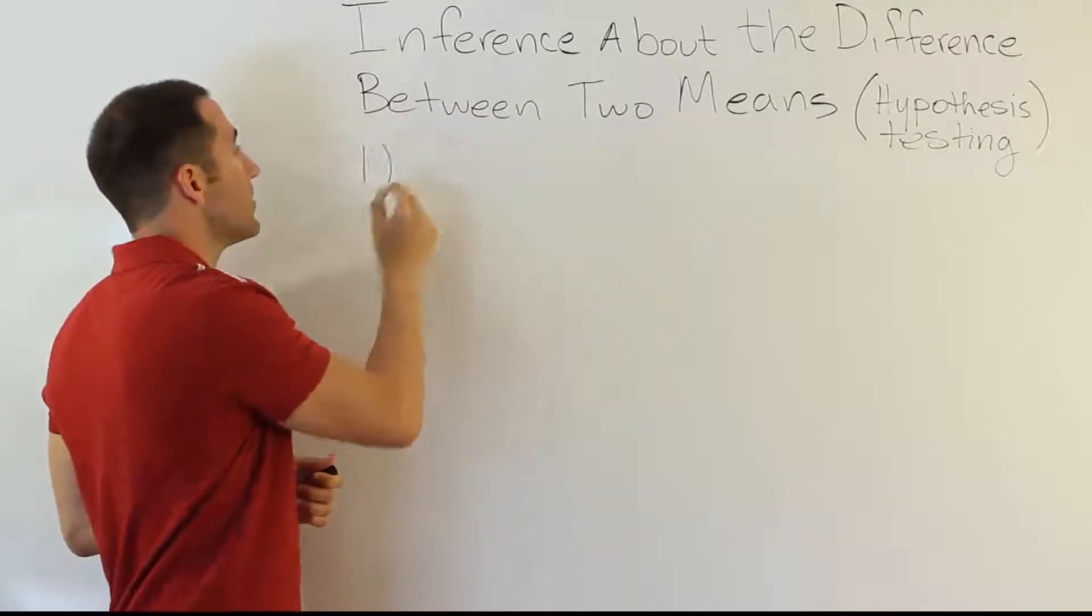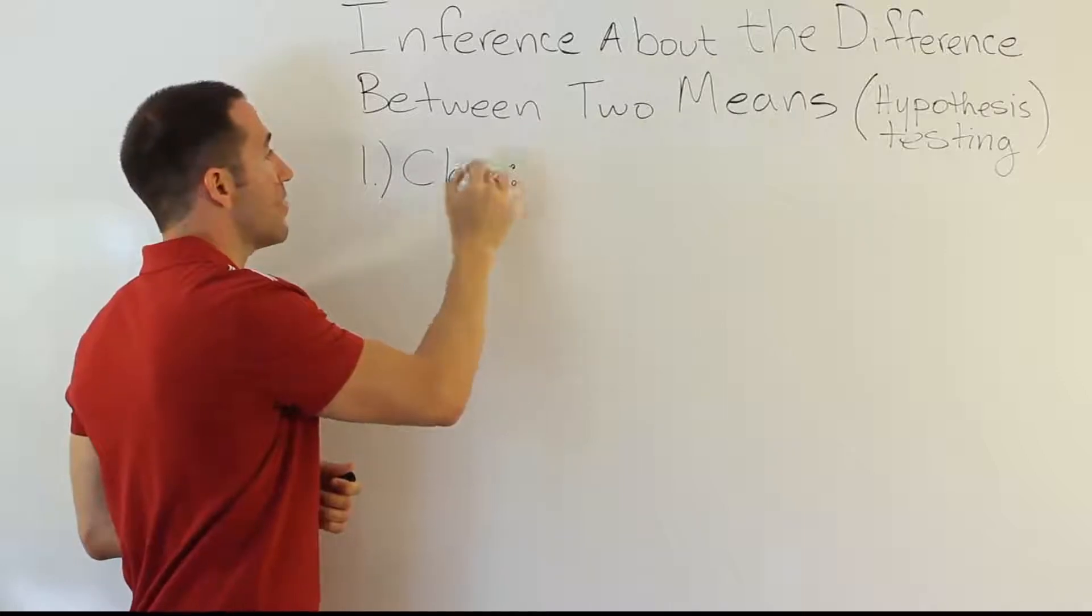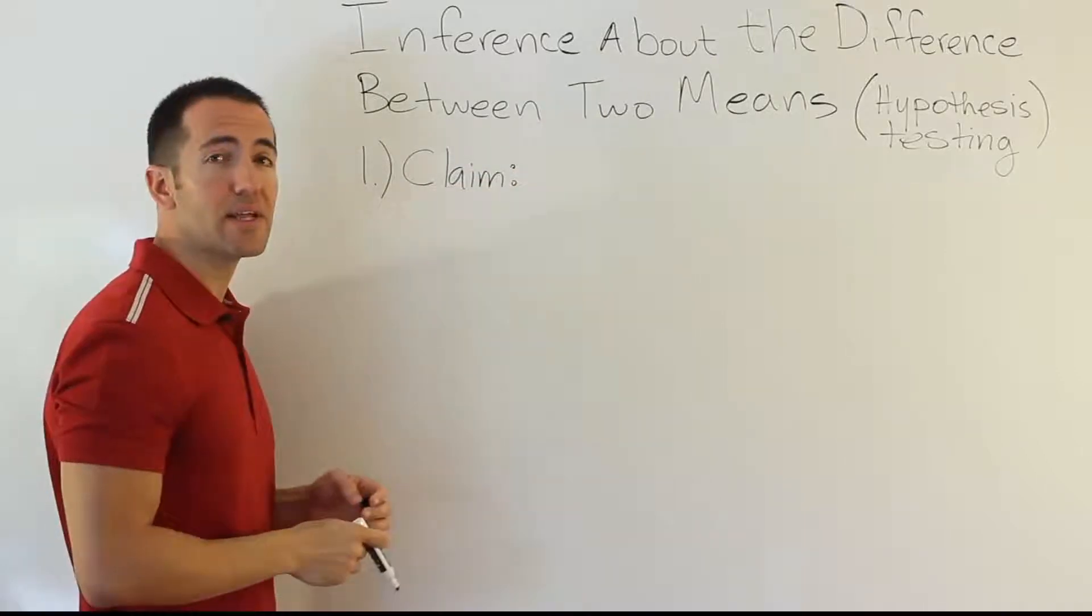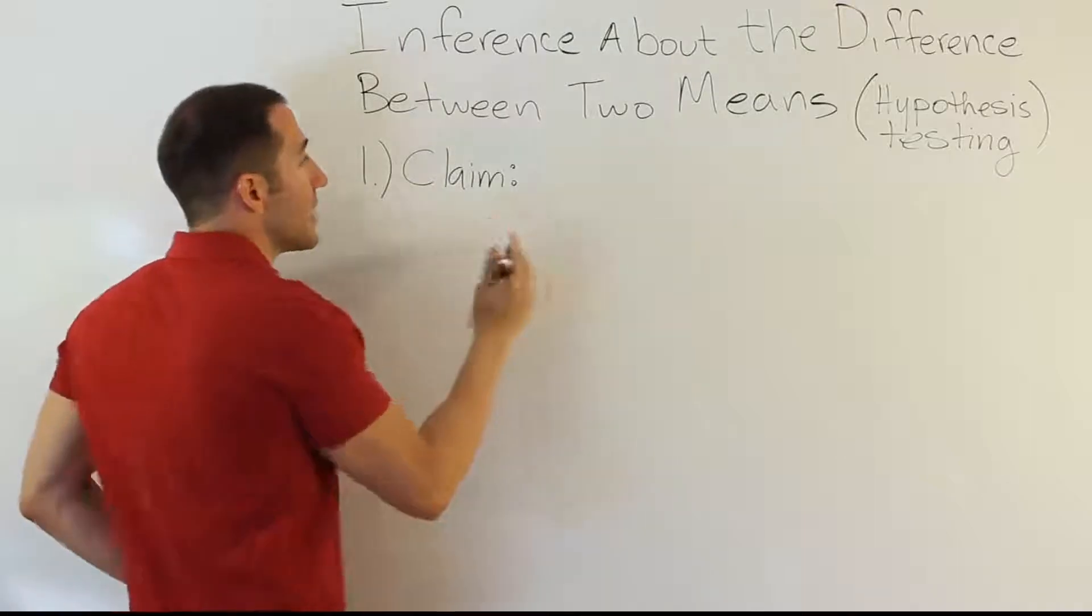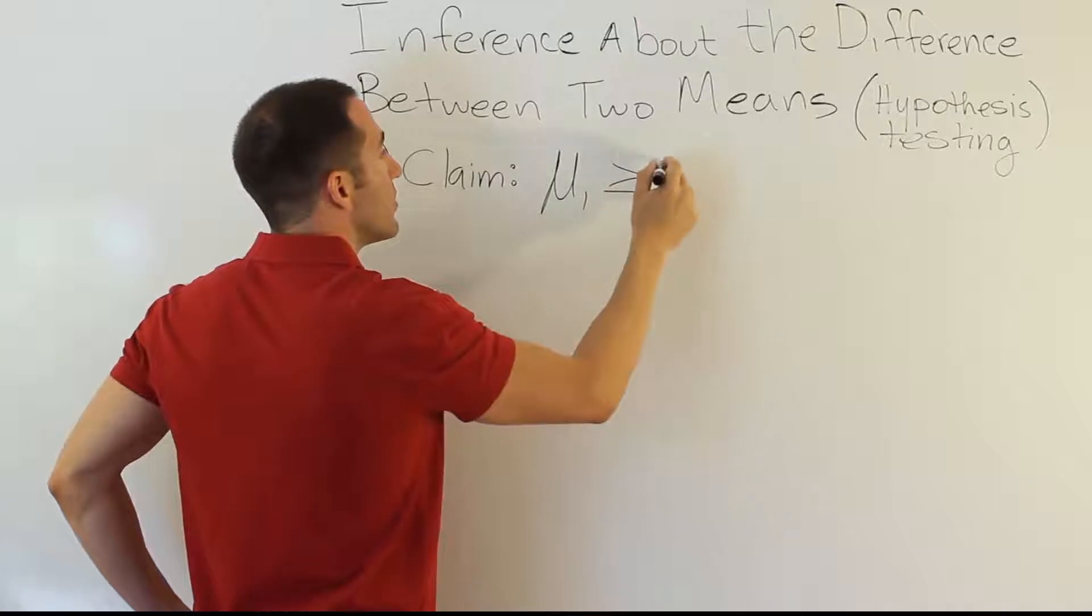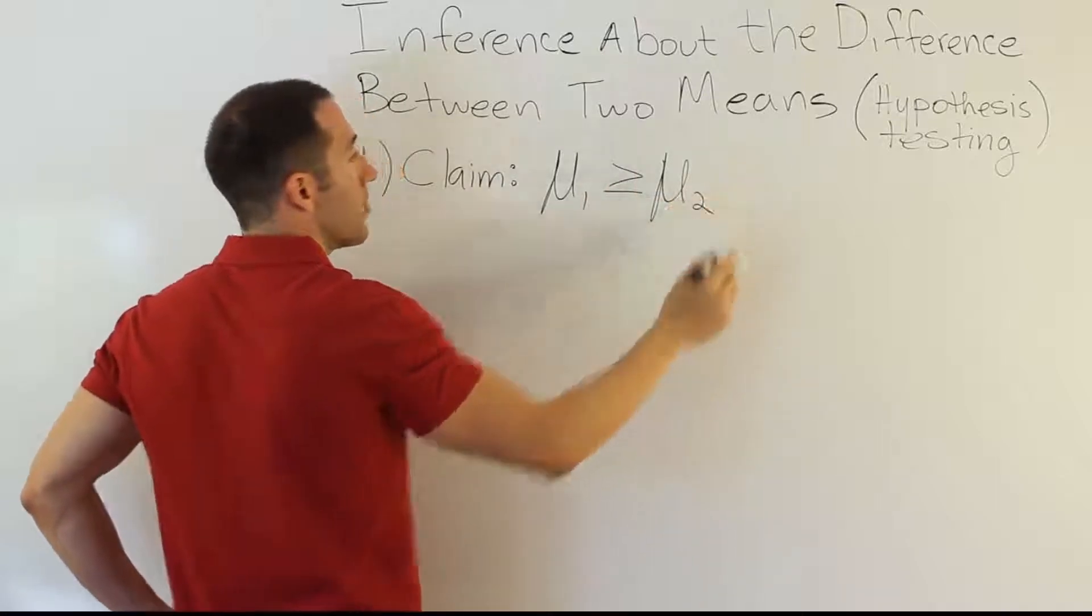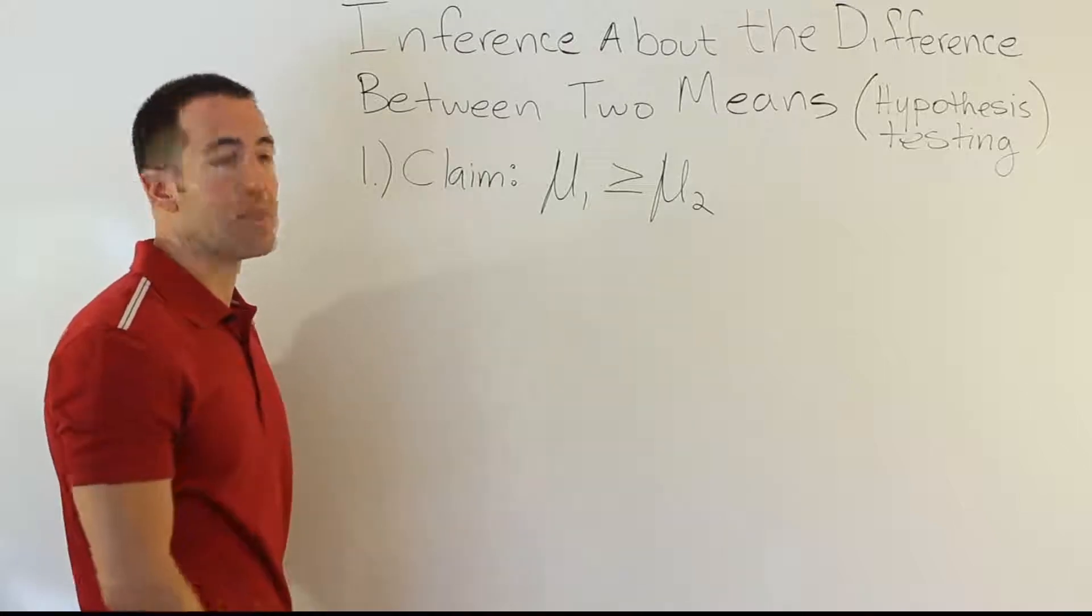The first thing is that we still have a claim and we still have to write that down in our very first step of the problem. We want to identify the claim immediately, get it written down in symbolic form. So, we might have a claim something like the mean for the first population is greater than or equal to the mean for the second population. That could be a claim we're dealing with. It's just one I've made up here.